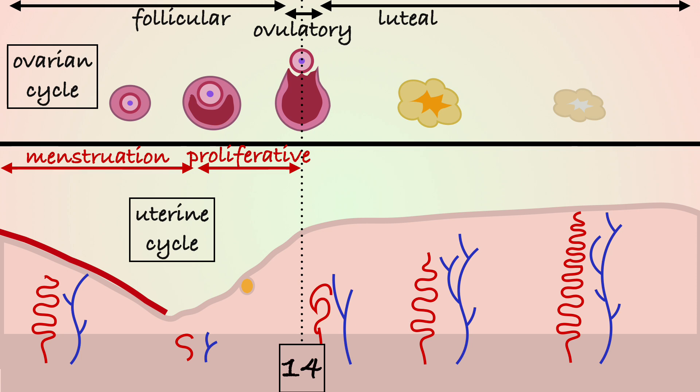As ovulation occurs, the secretory phase starts and lasts until day 28. High progesterone levels produced by the corpus luteum grow the glands of the functional layer and form the decidual lining into which the fertilized egg implants.